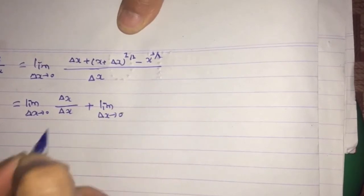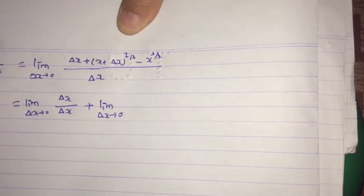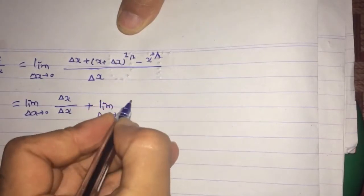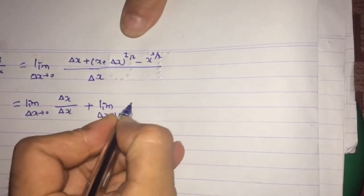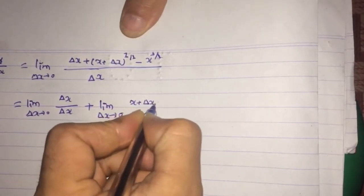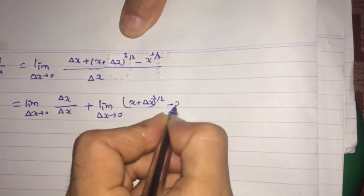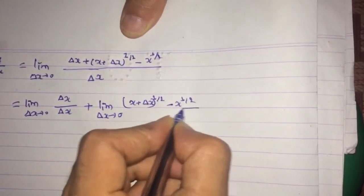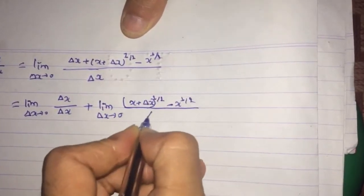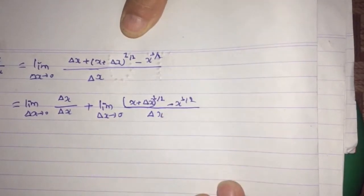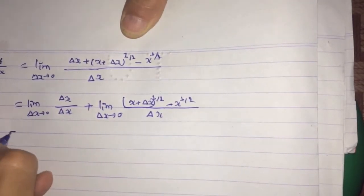Now separating the terms and applying the limit to all terms using the addition rule: limit as δx tends to 0 of δx/δx, plus limit as δx tends to 0 of [(x + δx)^(1/2) minus x^(1/2)] divided by δx.